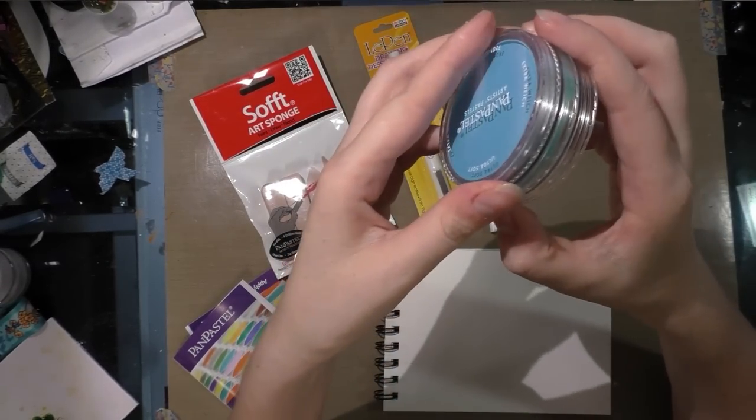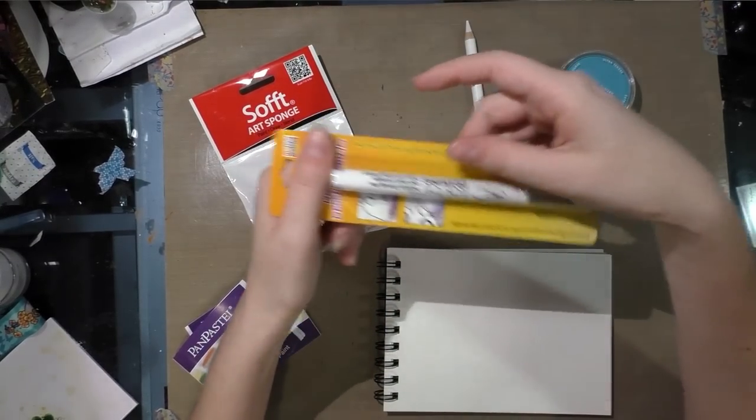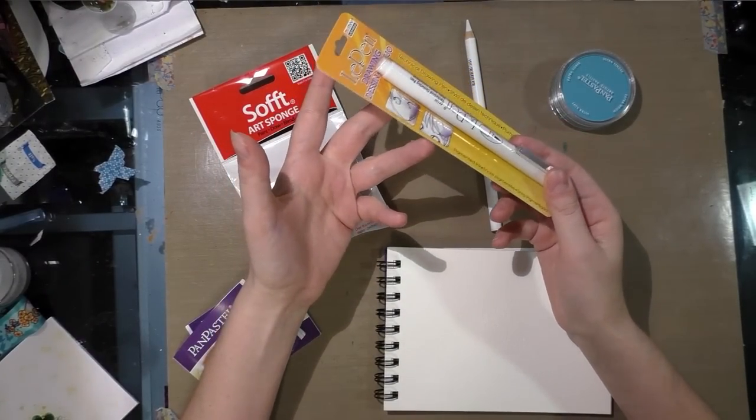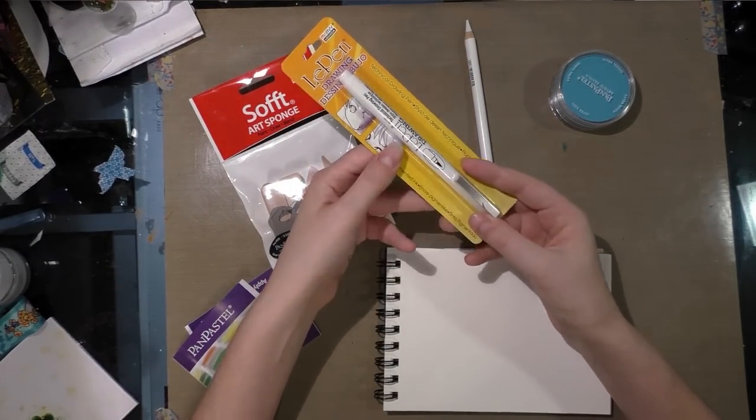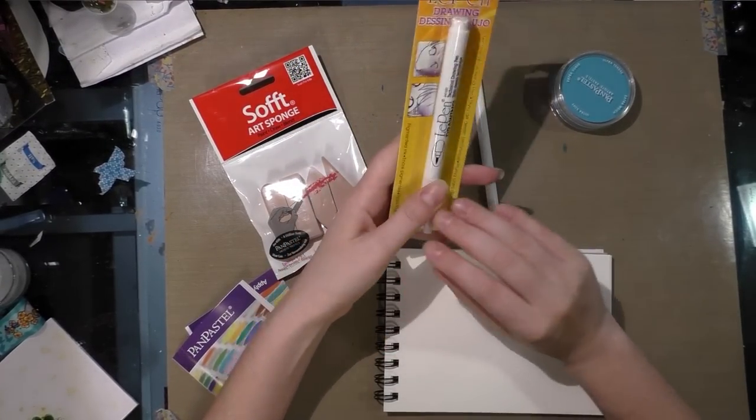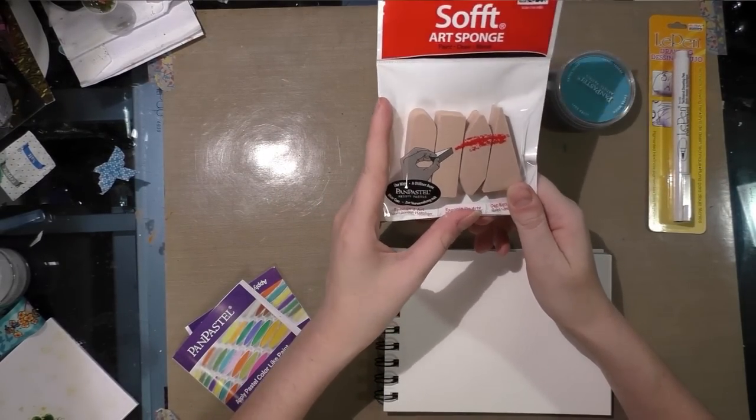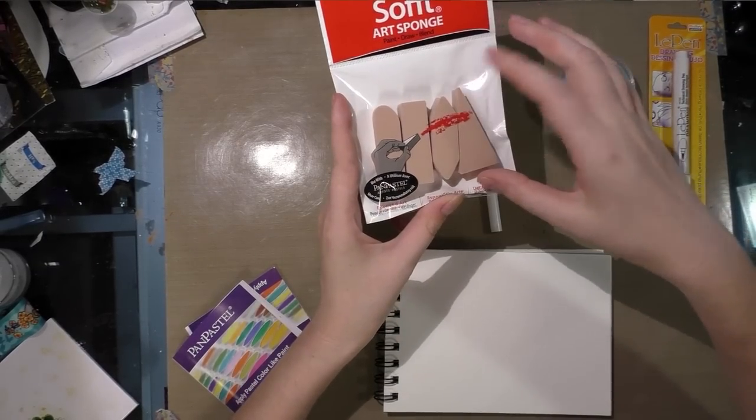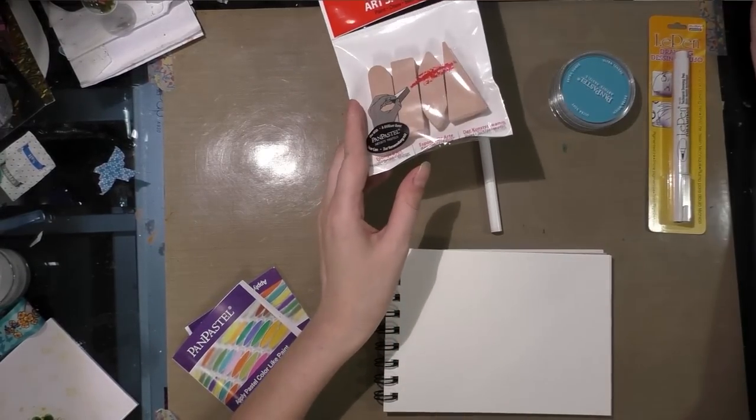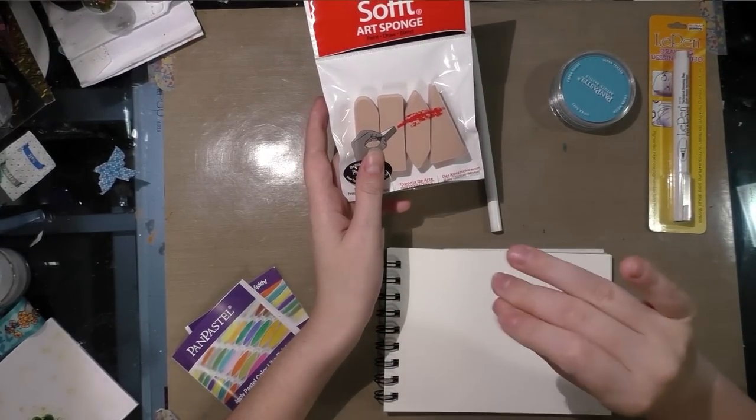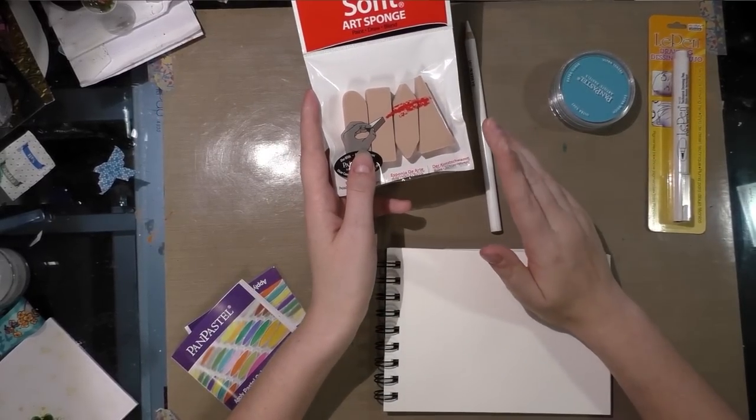The Marvy LePen brush pin is $1.59 at Jerry's Artarama. The set of soft art sponges has four different shapes and is $3.19 at Cheap Joe's or $2.61 at Dick Blick. The high-end total for this box, which costs $25 plus $5 shipping, is $17.52. The low end is $16.62.